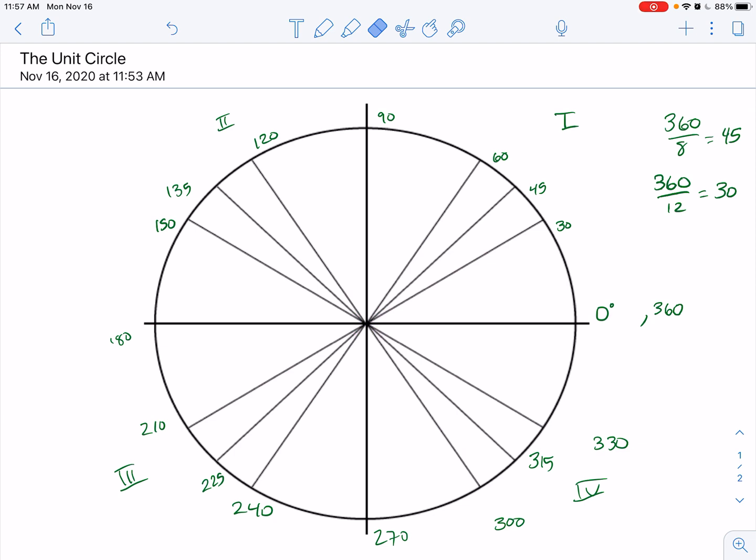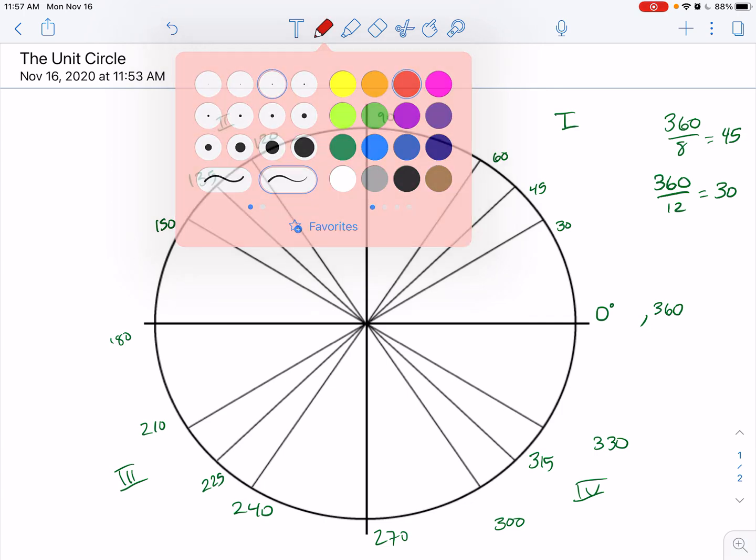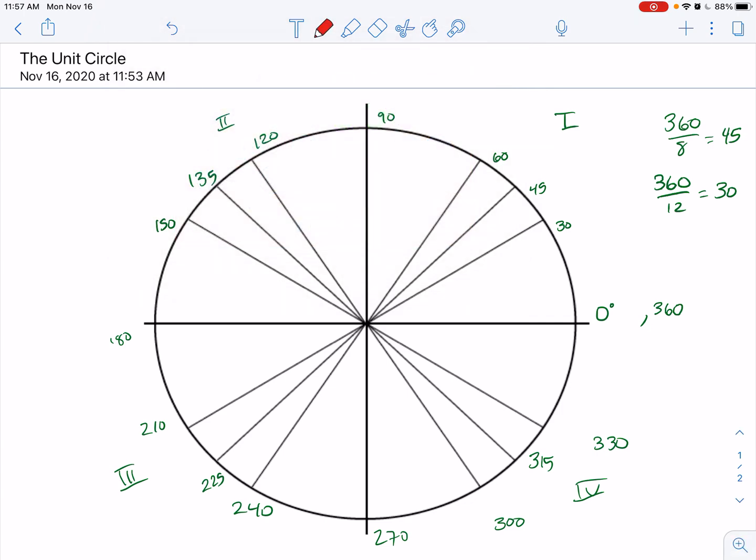Now, when we do the unit circle for real, we probably should indicate the degree symbol, but I'm not going to make you write it when I want to see that you know the unit circle. The other part is that we then also have to do radians. So we know this is zero radians.